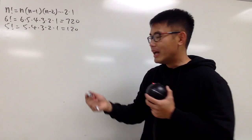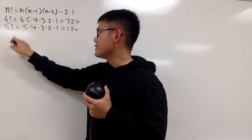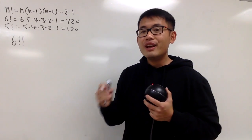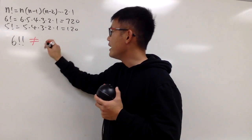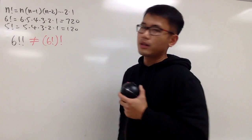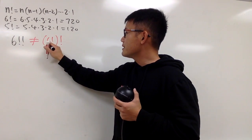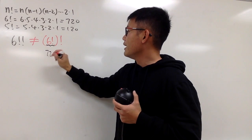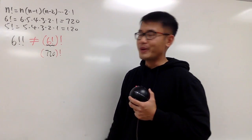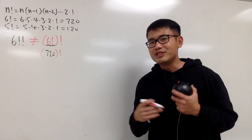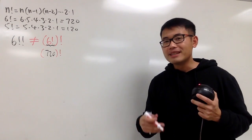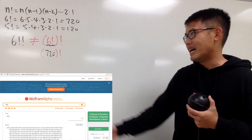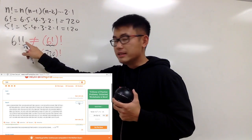Now I have a question — have you heard of double factorial? For example, what does 6 double factorial mean? First of all, this is not the same as taking 6 factorial and then doing another factorial. That would give 720 factorial, which is an astronomical number. Double factorial is a completely different notation.